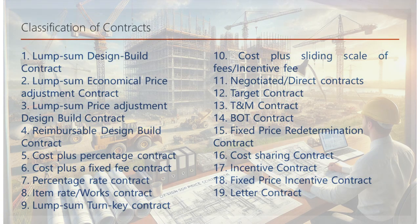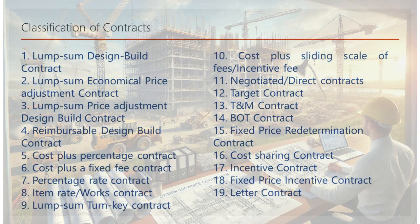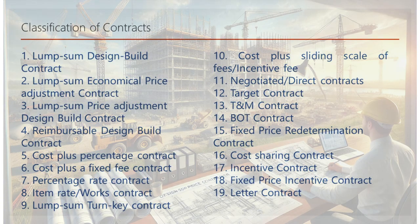1. Lump-sum design-build contract: the contractor agrees to complete the project for a fixed price covering both design and construction. 2. Lump-sum economical price adjustment contract: similar to a lump-sum contract, but with provisions for adjusting the price based on specific economic conditions. 3. Lump-sum price adjustment design-build contract: combines a lump-sum contract with price adjustments, ensuring the contractor handles both design and construction with flexibility for cost changes. 4. Reimbursable design-build contract: the contractor is reimbursed for actual costs plus a fee, offering flexibility in project execution.